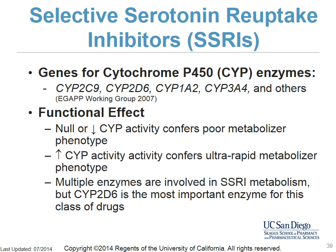In this section, we'll focus on selective serotonin reuptake inhibitors, or SSRIs, and how they're affected by cytochrome P450 enzymes encoded by CYP2C9, CYP2D6, CYP1A2, CYP3A4, and others. Decreased CYP activity confers a poor metabolizer phenotype, while increased enzyme activity confers an ultra-rapid metabolizer phenotype. Multiple enzymes are involved in SSRI metabolism, but CYP2D6 is the most important enzyme for this class of drugs.